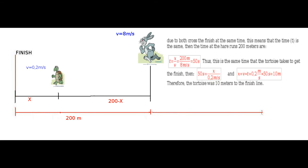We calculate the time that the hare runs 200 meters: 200m over 8 meters per second. This is equal to 50 seconds. This is the time that it takes the hare to get to the finish line.